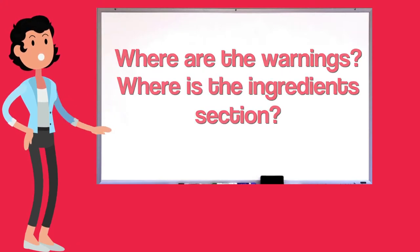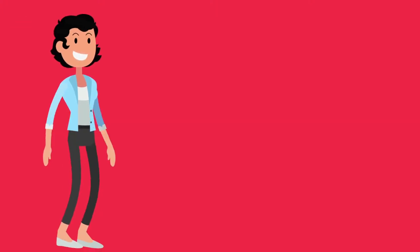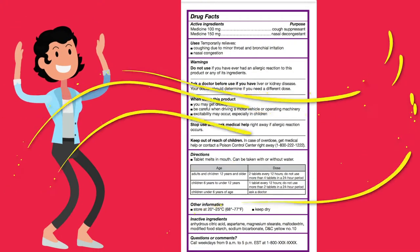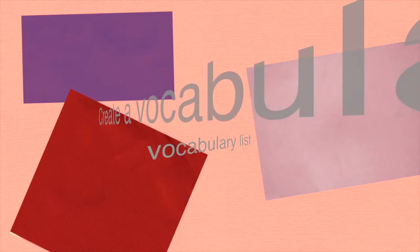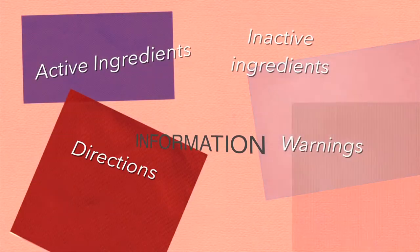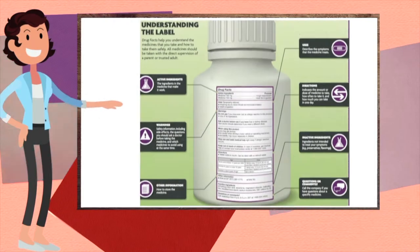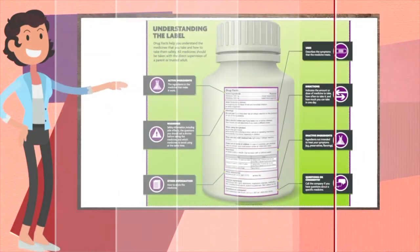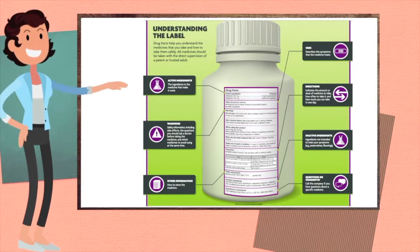Directions and drug information for OTC medicines are found on the drug facts labels per FDA regulation. Walk students through each section of the labels on the worksheet. Create a vocabulary list to reinforce new terms, explaining that these terms provide us with the information we need to use medicine responsibly. If you are using a whiteboard, project the image of the drug facts label onto the board, review the different sections, use the classroom poster to support the discussion, and reinforce the new vocabulary words.